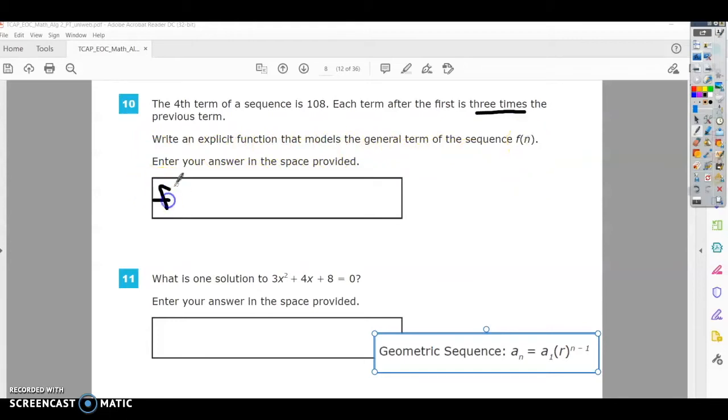First, I'm going to put f(n) here because I know that's going to start our function. The second thing is I'm going to look back and it says each term after the first is three times. That means r equals three. That means we have a geometric sequence. If it's add or subtracting, it's a common difference and would be arithmetic, but we know we have a geometric.